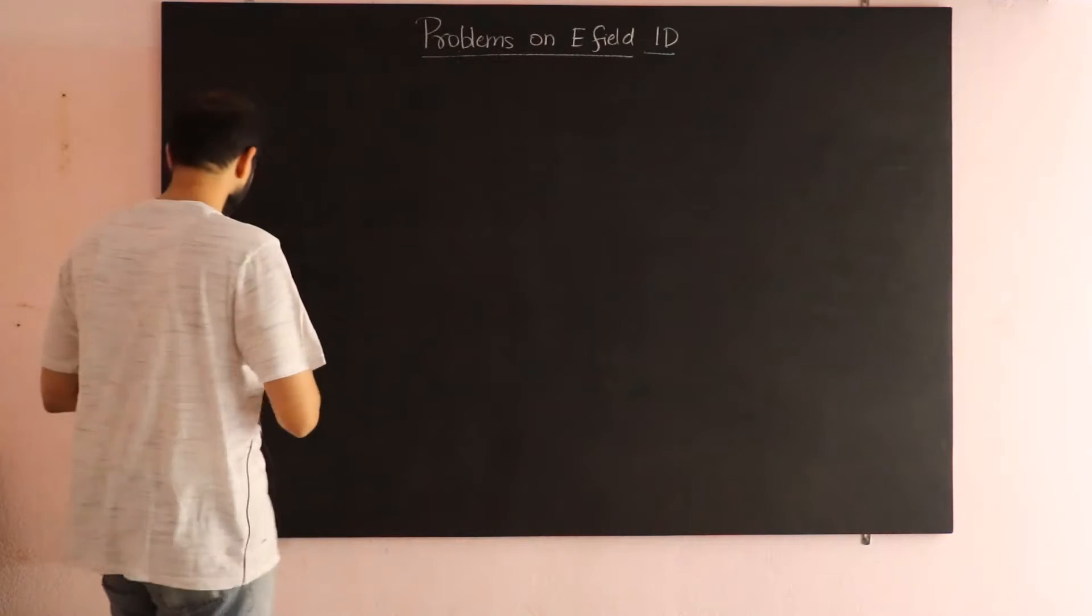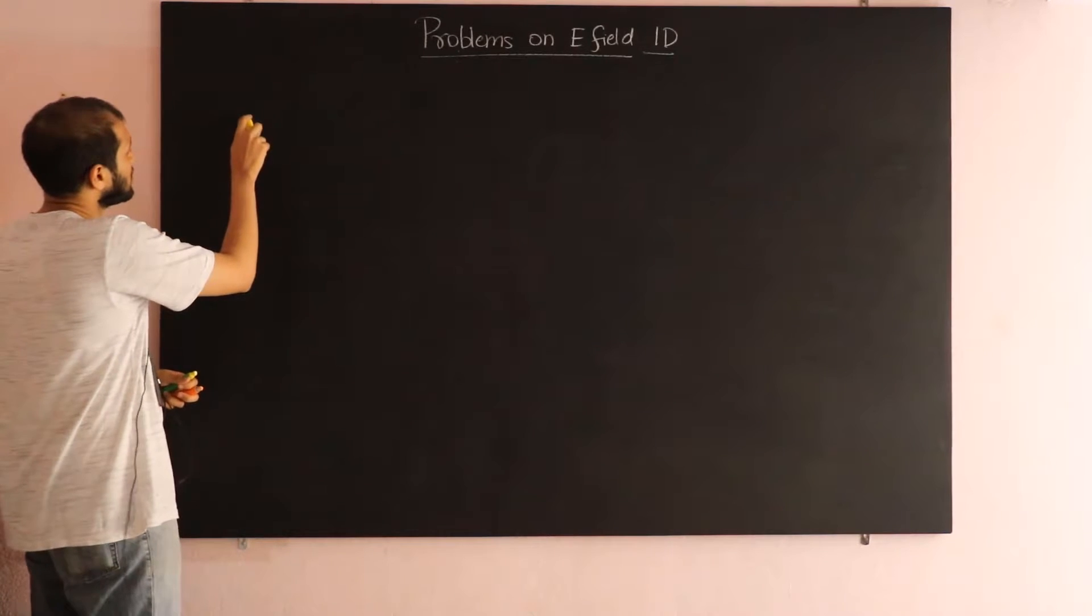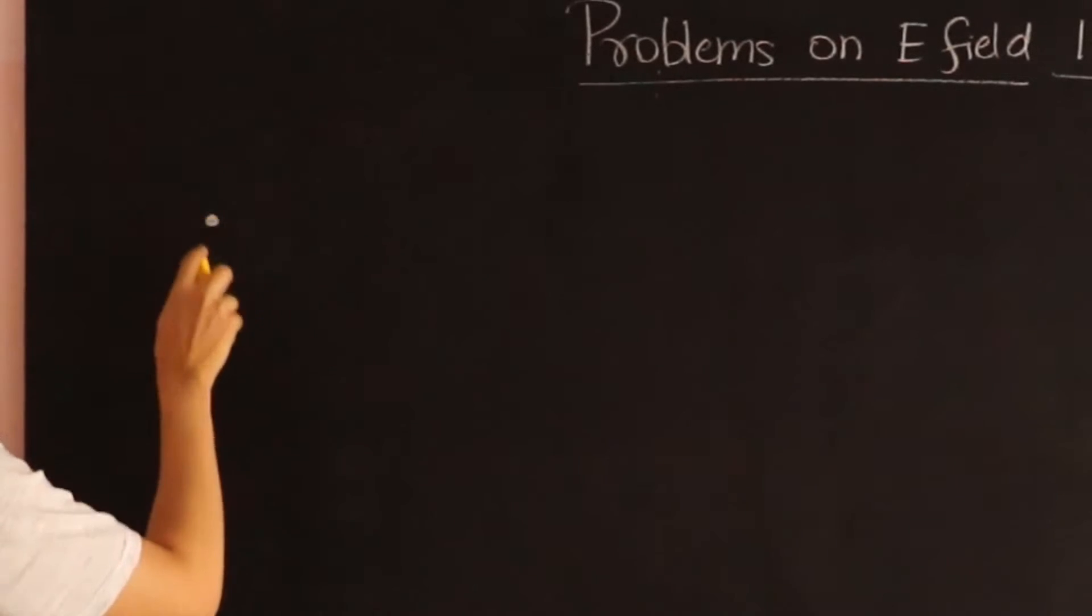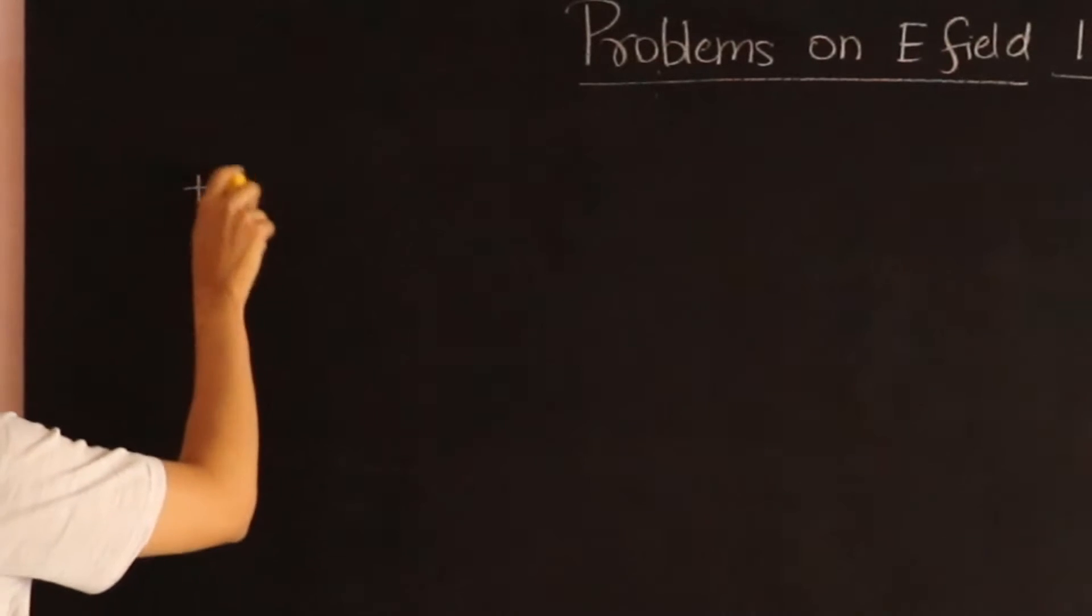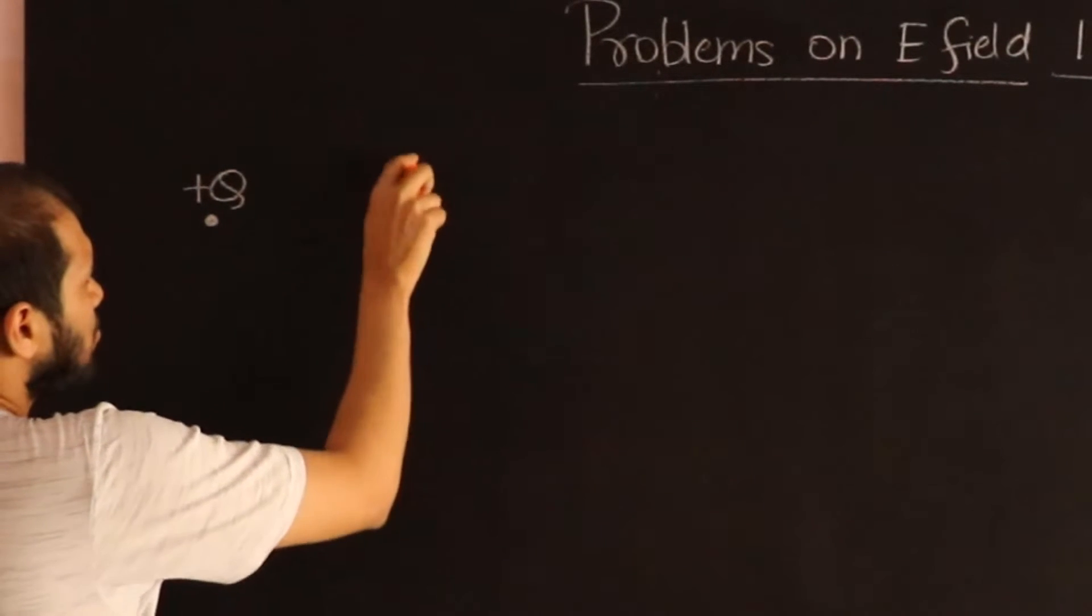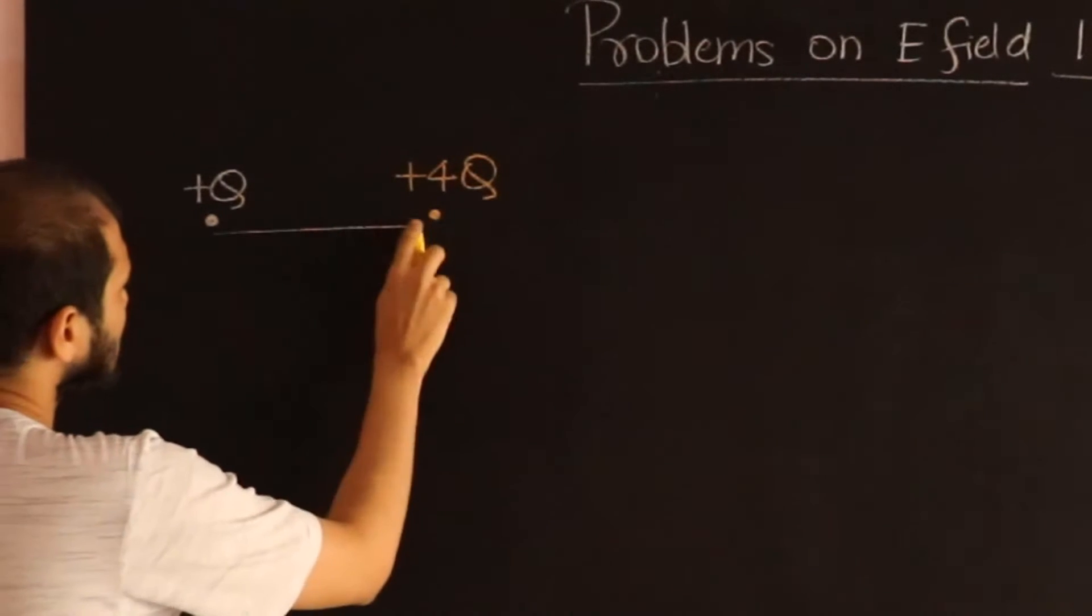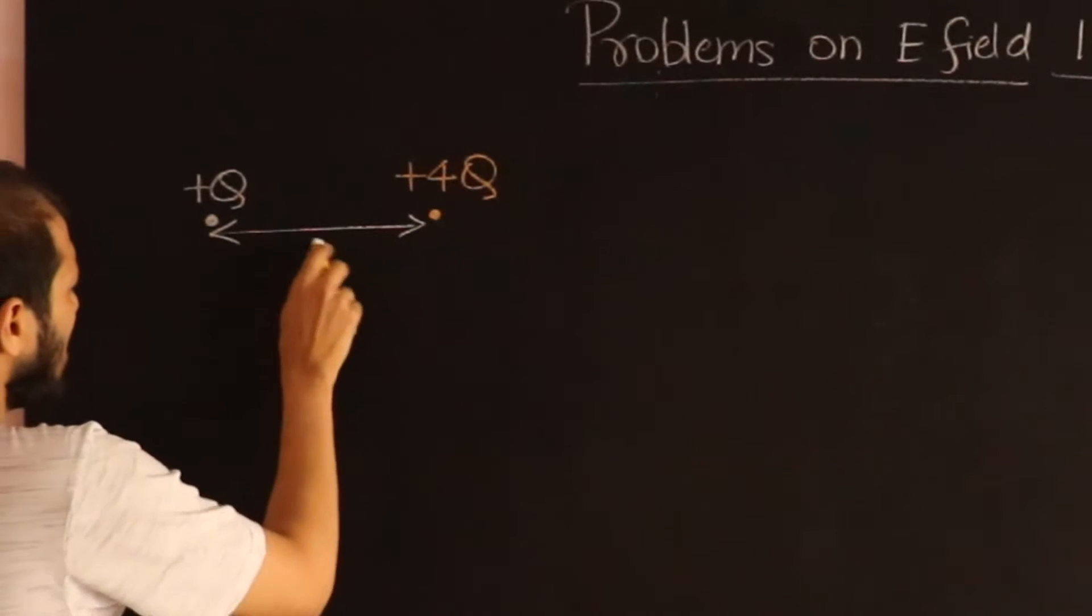So here's an example. Suppose I have two charges placed over here. One charge, let's call it plus Q, and a second charge, let's call it plus 4Q, and they're separated by a distance A.